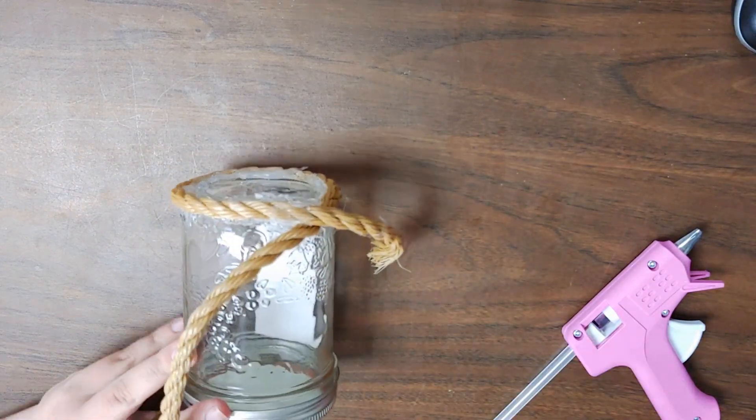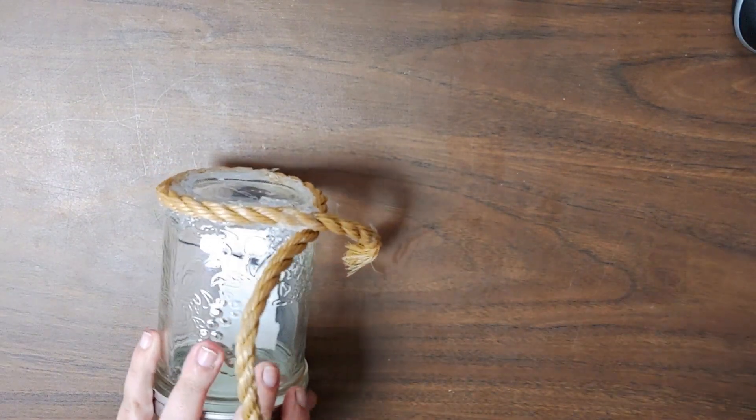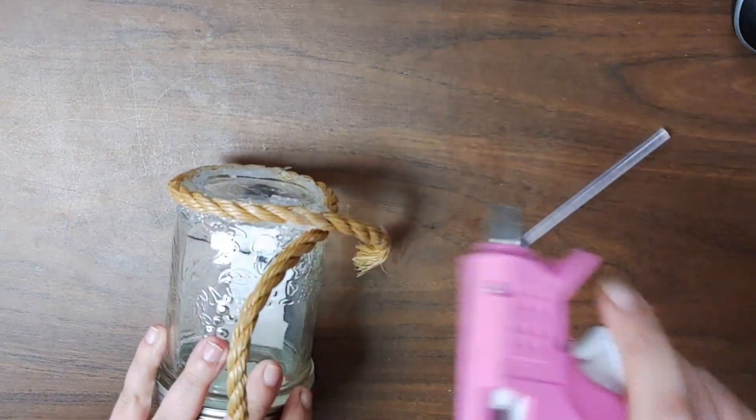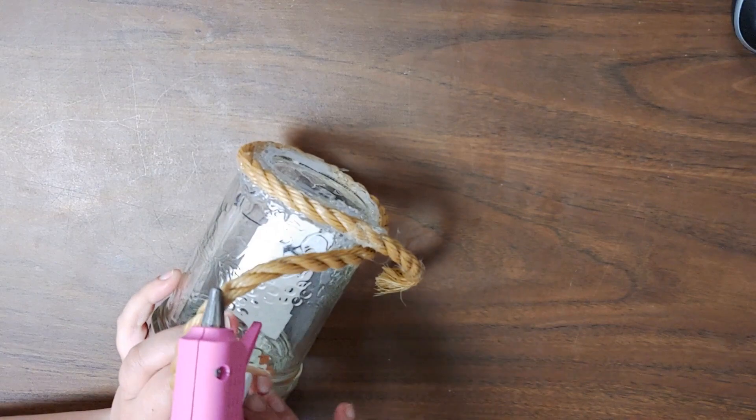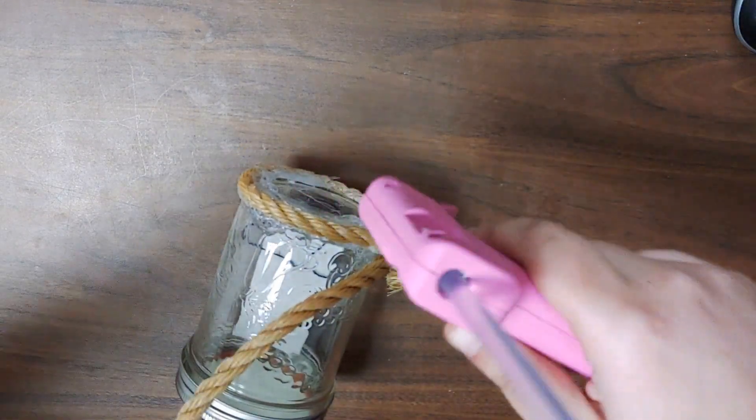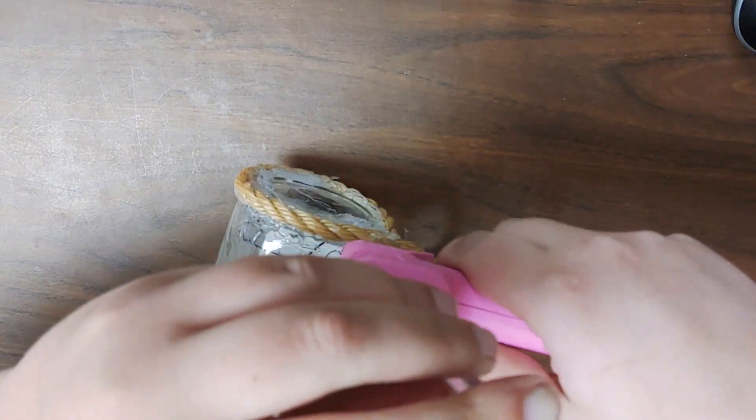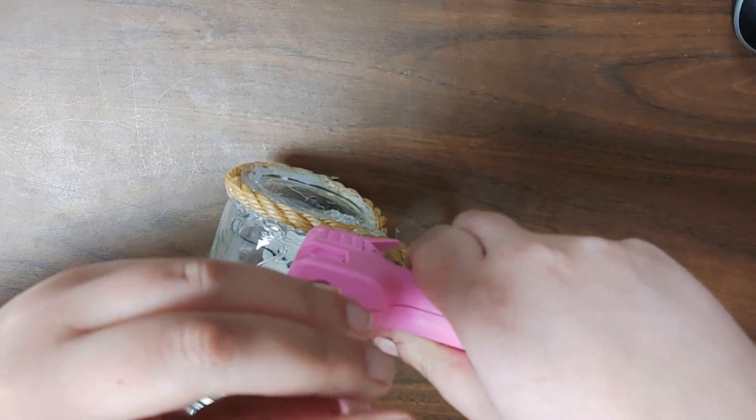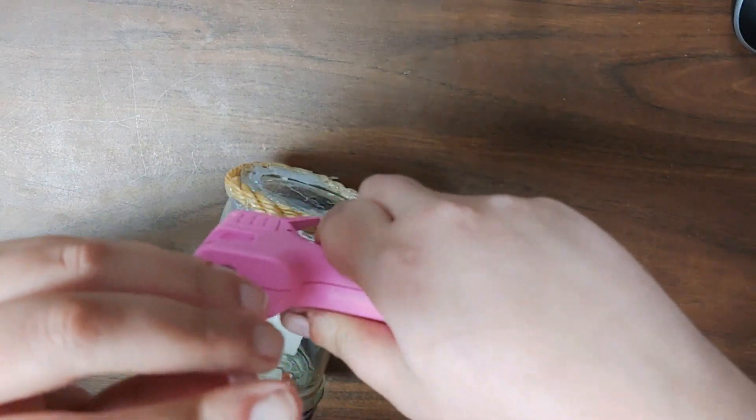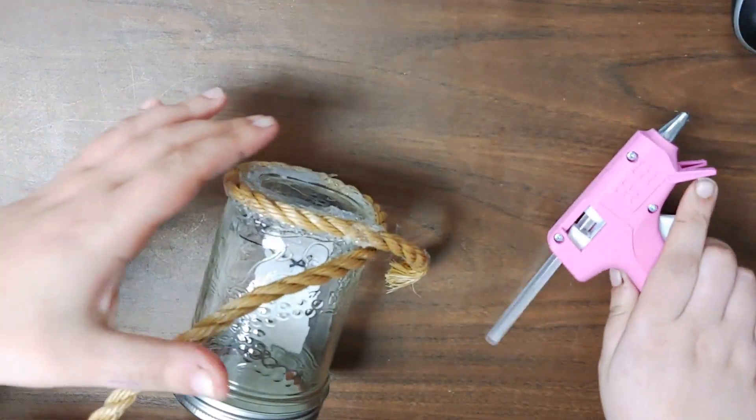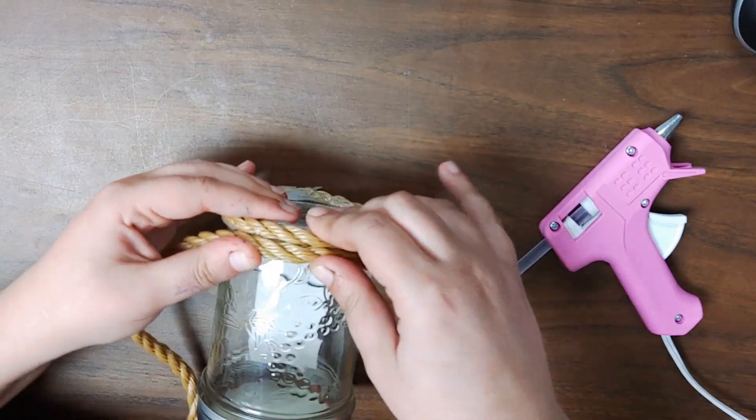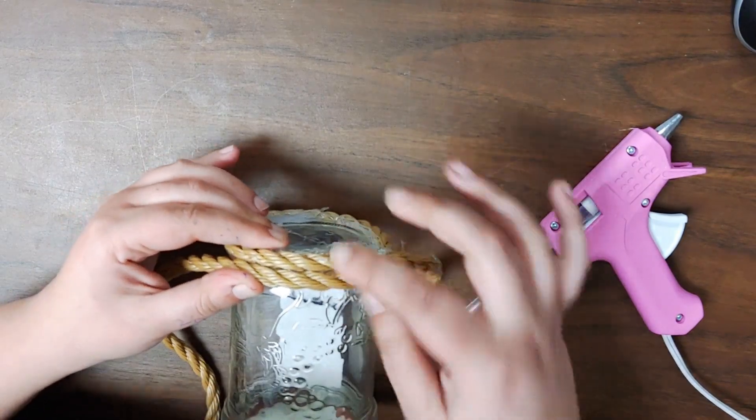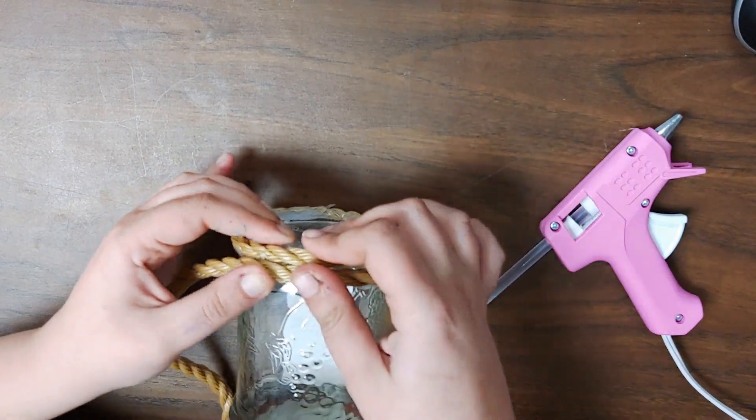It's going to go along like that all the way around. I'm going to try my best to do this so you can see. One thing about these mini glue guns is they run out of glue really fast—you're constantly having to stick another one in.